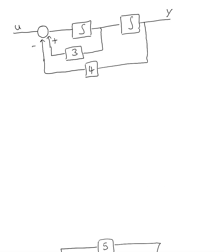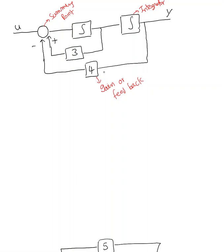In the previous videos we saw how to draw or define state equations and output equations from an electrical circuit or mechanical system. Now in this video we're going to see how to define state equations and output equations from a simulation diagram. A simulation diagram has three key components: an integrator, a summing point indicated with a circle, and a gain or feedback block with a constant inside.